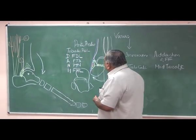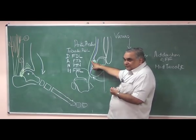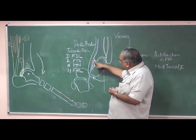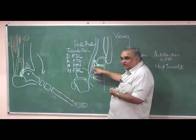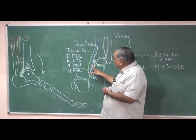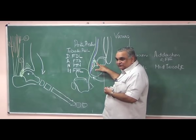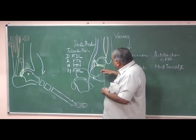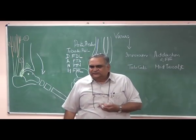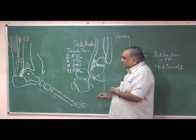If you want to correct inversion, you will have to divide the flexor retinaculum in the subcutaneous tissue. You will have to lengthen, transfer, or resect the tibialis posterior. The flexor digitorum longus and flexor hallucis longus will have to be lengthened. The artery and nerve will have to be preserved.